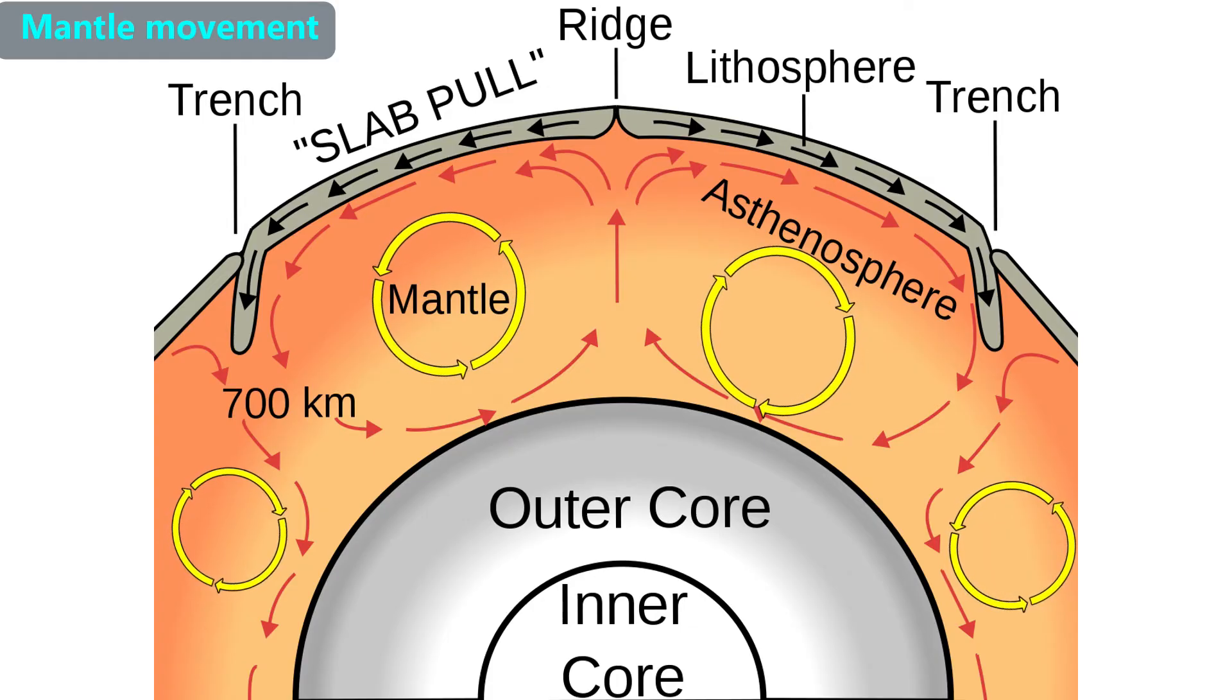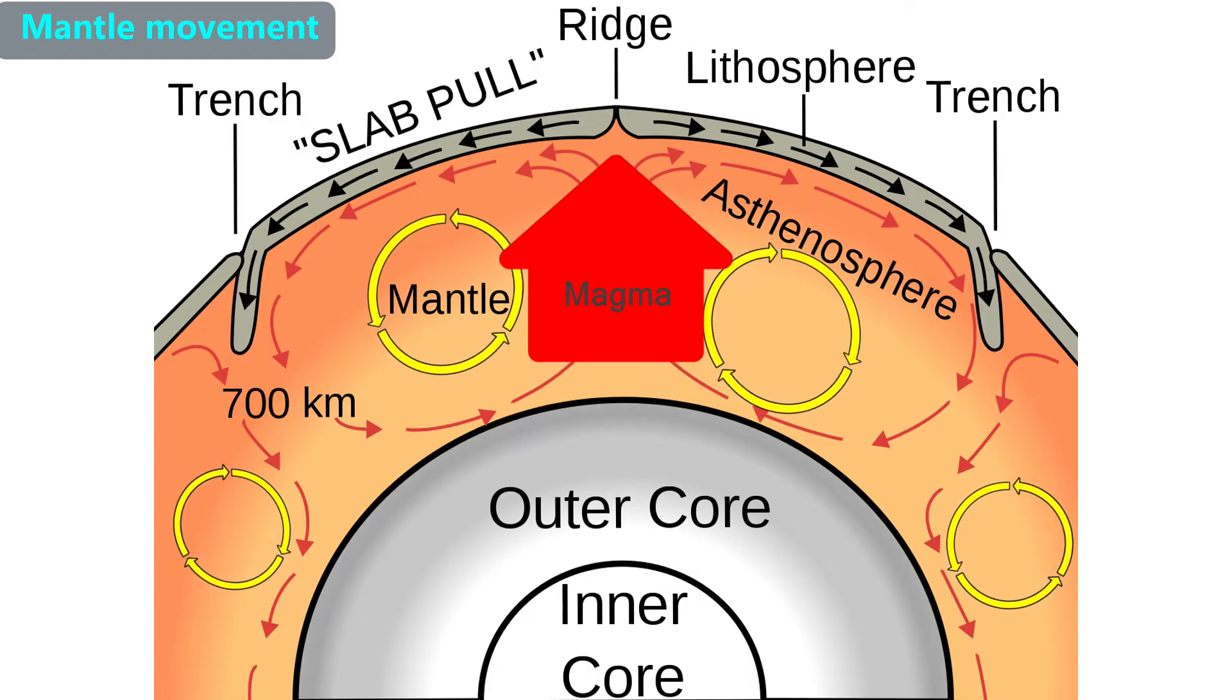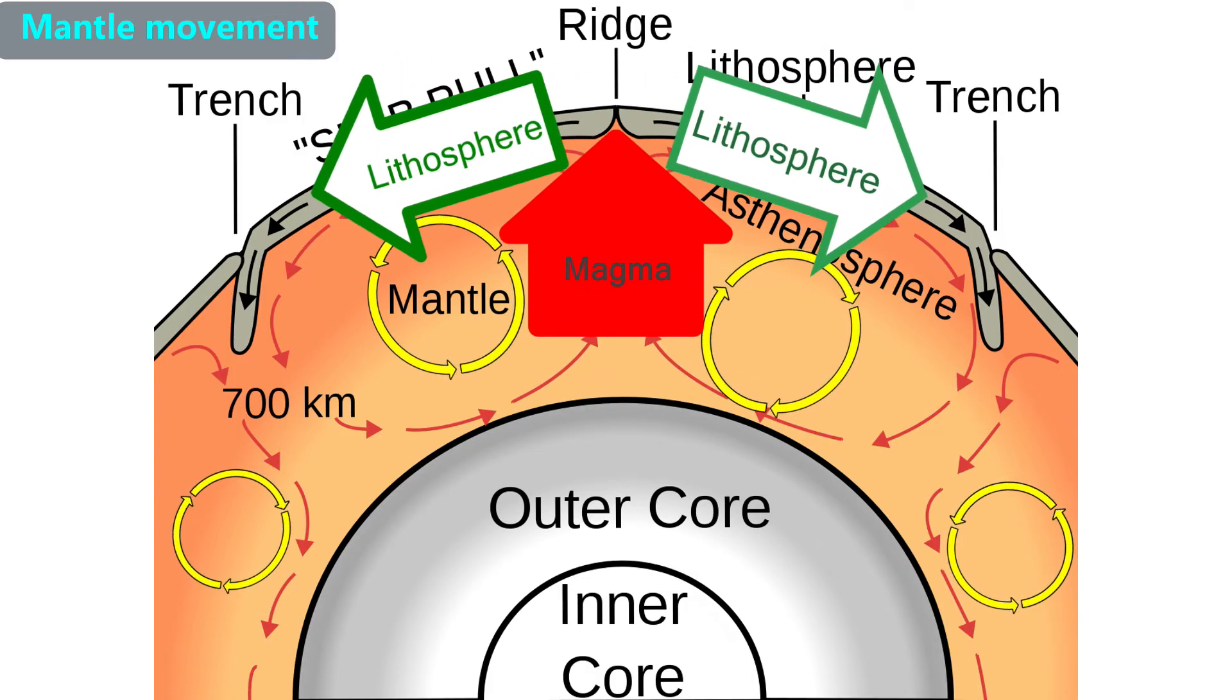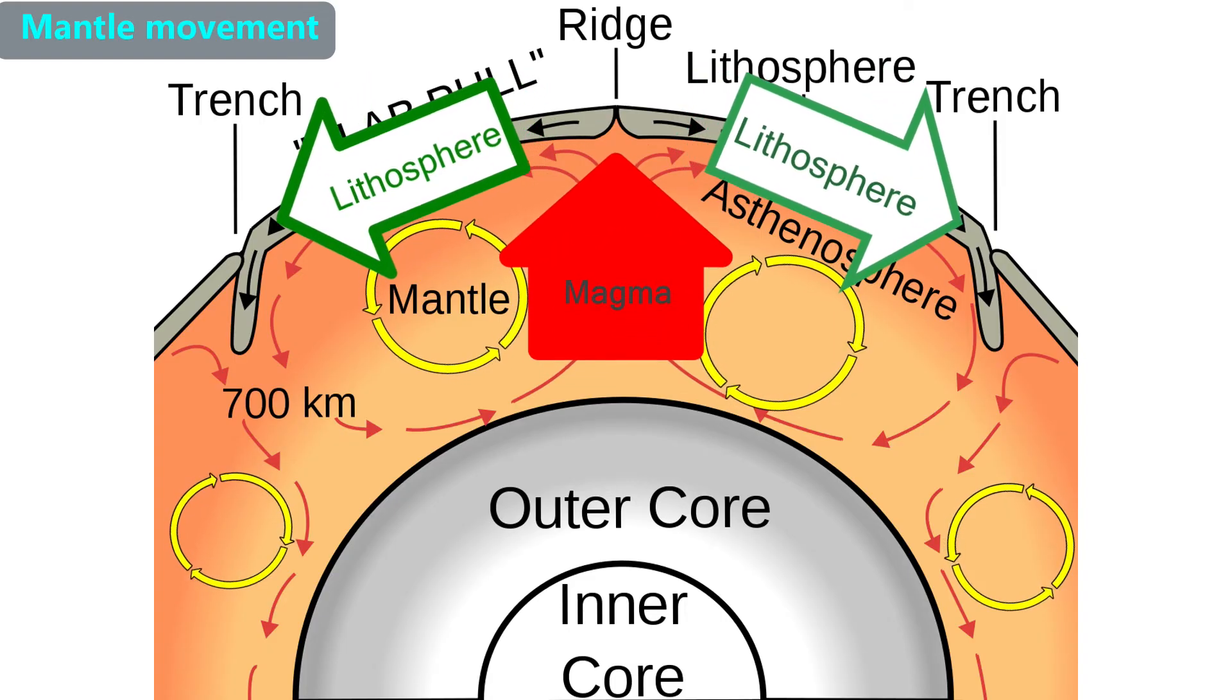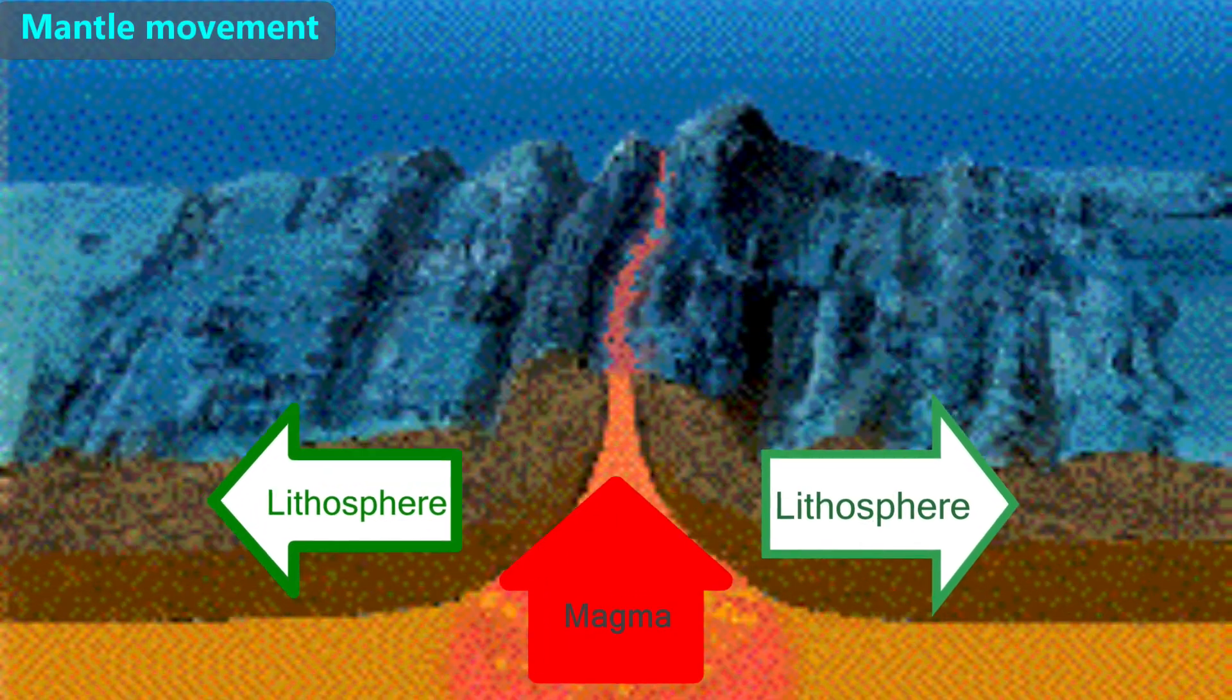In this more complete model, we see multiple arrows representing many convection currents. Slab-pull may also be moving some of these tectonic plates. There are also theories which suggest that magma coming up through ocean ridges, like the mid-Atlantic ridge, may exert a pushing outward force on adjacent tectonic plates, though as of this writing that force is thought to play a minor role.